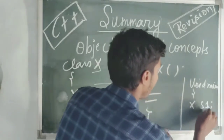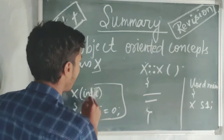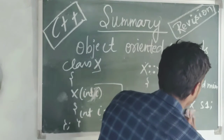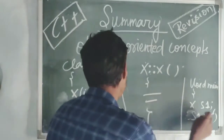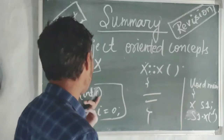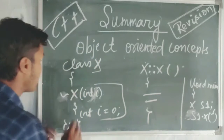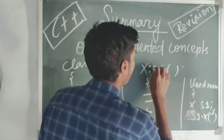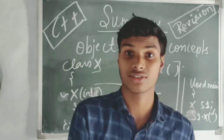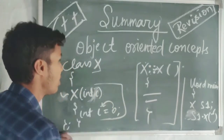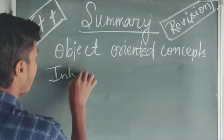If you need to pass arguments to the constructor, you write 's1.X' and pass the required arguments. For a destructor, you write a tilde sign before the class name. The constructor initializes the value; the destructor destroys or ends the value.